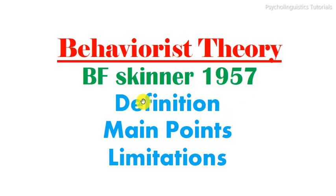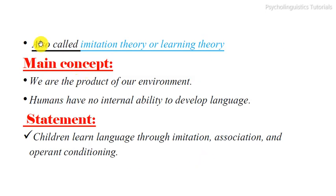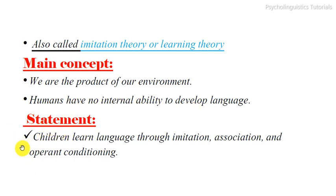First we will discuss its definition, then its main points, and then its limitations. This theory is also called the imitation theory or learning theory. The main concept of the theory is that we are the product of our environment, and humans have no internal ability to develop language.